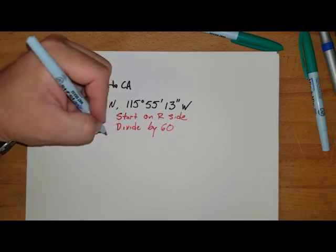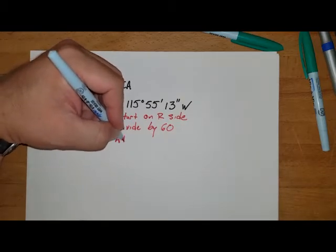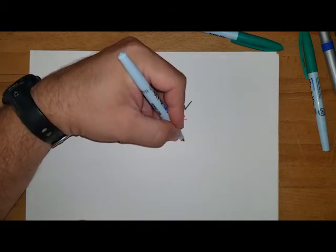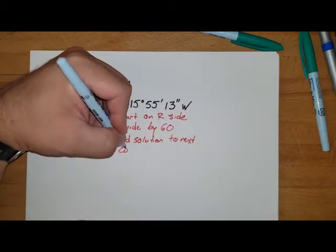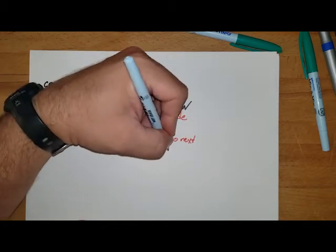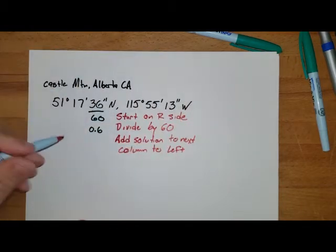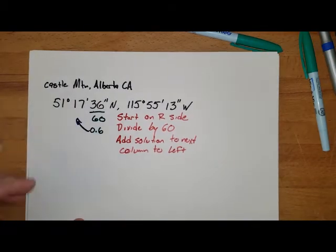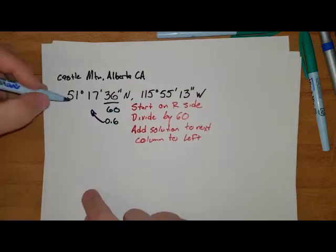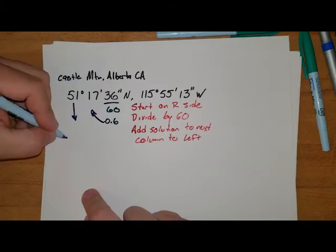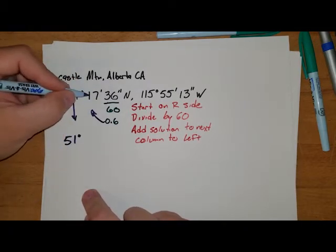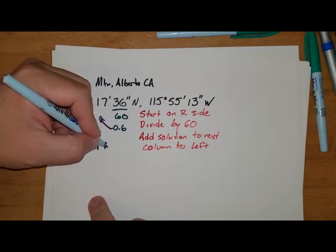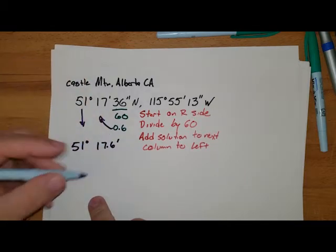Okay, so what do we do with that? Well, we're going to take whatever the results are and we're going to add that solution to the next column to the left. All right, so we've got that 0.6, and now what we're going to do is we're going to bump it over, we're going to add it to that. And I'm going to drop this guy down, so it's going to be 51 degrees, and I'm going to take 17 plus 0.6, which will give me 17.6 minutes.